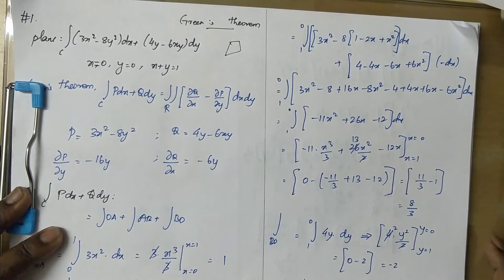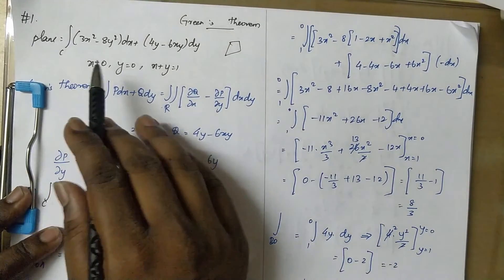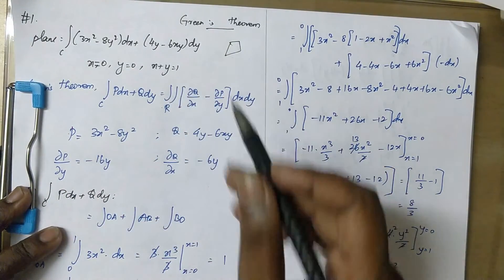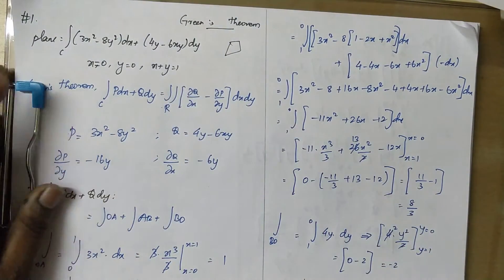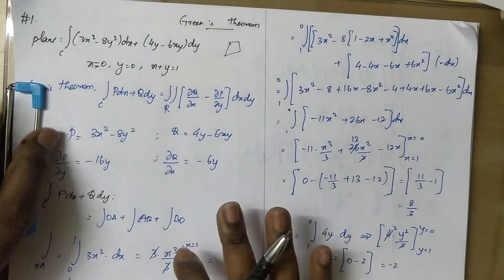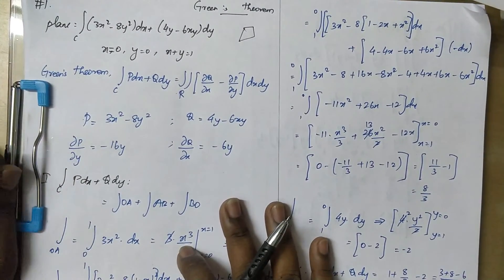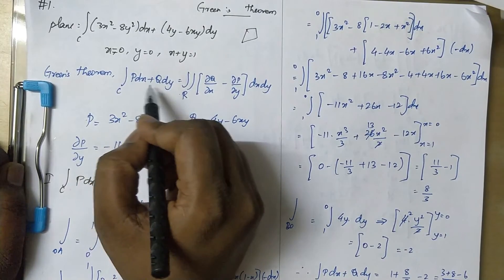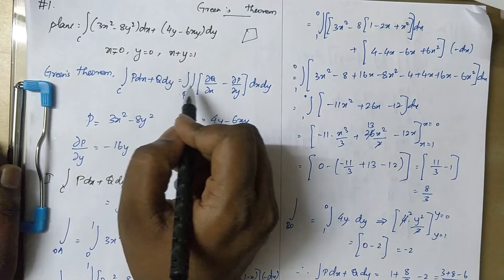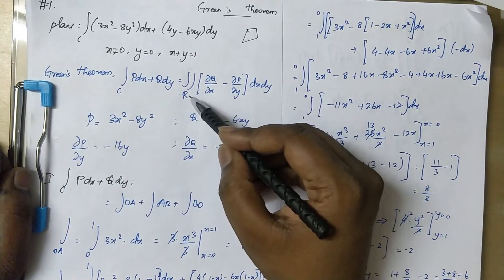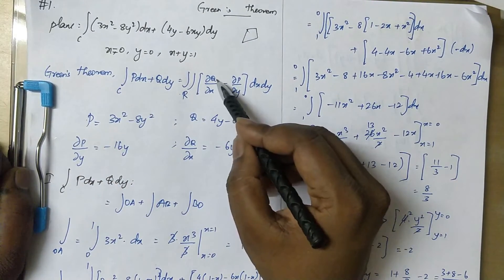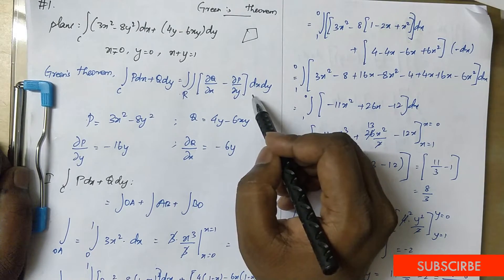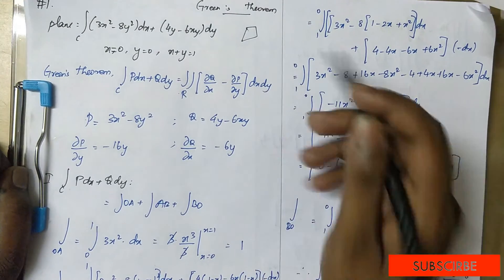So x equal to 0, x plus y equal to 1. Green's Theorem: the line integral C of P dx plus Q dy is equal to the double integral over R of (dou Q by dou x minus dou P by dou y) dx dy.